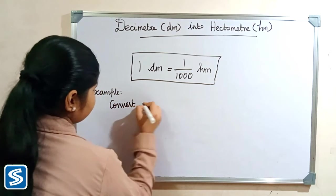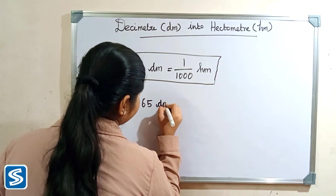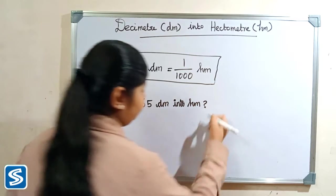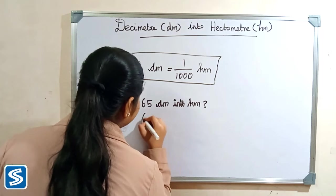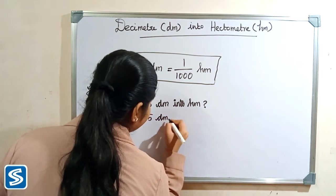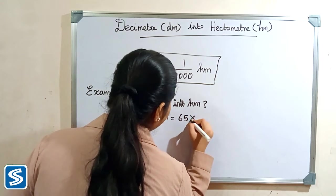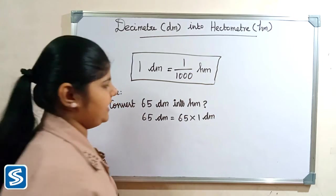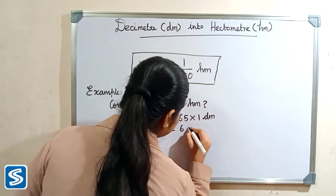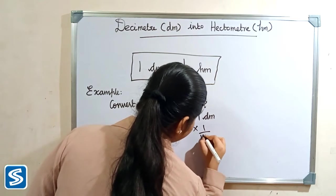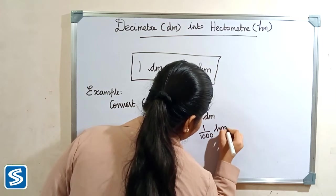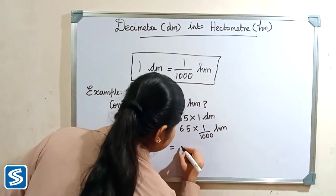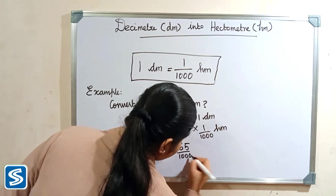Convert 65 decimeter into hectometer. So 65 decimeter can be written as 65 multiply one decimeter. Substituting the formula, 65 decimeter equals 65 multiply one by thousand hectometer. 65 multiply one will be 65, so we have 65 by thousand hectometer.